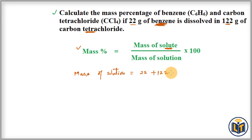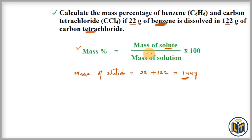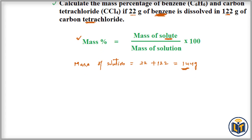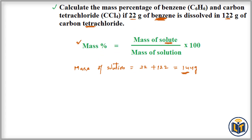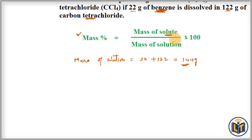Mass of solution = mass of solute (22 g) + mass of solvent (122 g) = 144 g. This is the mass of solution, and now we can apply the formula.